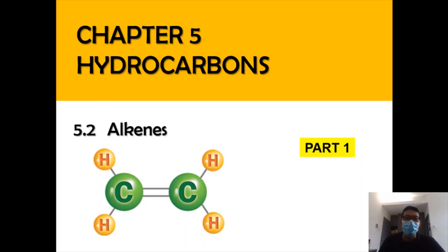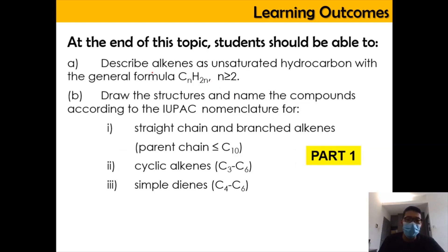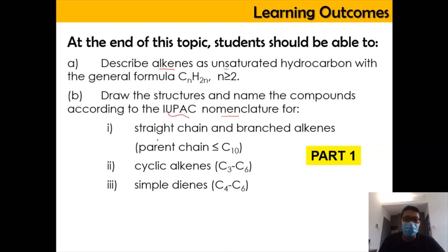Hi, Assalamualaikum and a very good morning. So now we are in Chapter 5, Hydrocarbon, focusing on the new subtopic which is 5.2 alkene, part 1 of the video. In this video, we're going to look into alkene as the unsaturated hydrocarbon, as well as drawing structures and naming compounds according to IUPAC nomenclature. We're going to do that for straight chain and branched alkene, cyclic alkene, and also simple diene.